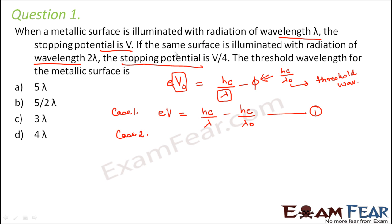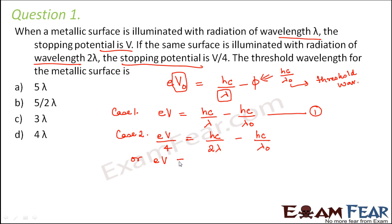For case two: the same surface is illuminated with wavelength 2λ and stopping potential V/4, so e(V/4) = HC/(2λ) − HC/λ₀. Multiplying both sides by 4 gives: eV = 4HC/(2λ) − 4HC/λ₀ = 2HC/λ − 4HC/λ₀. This is equation two.